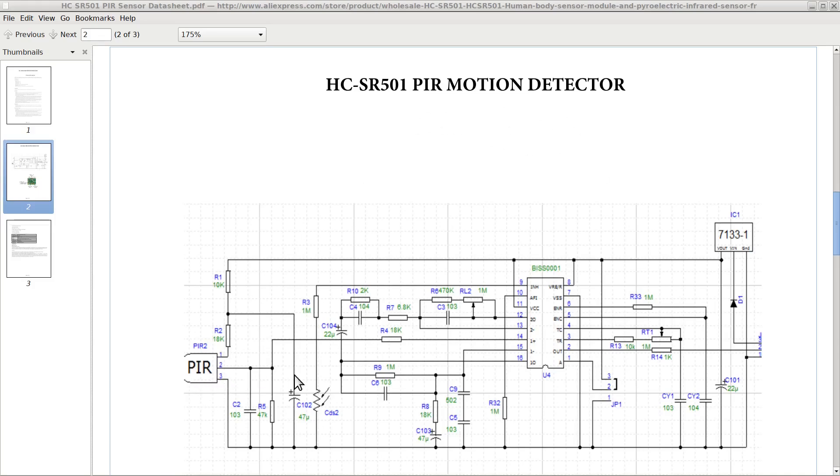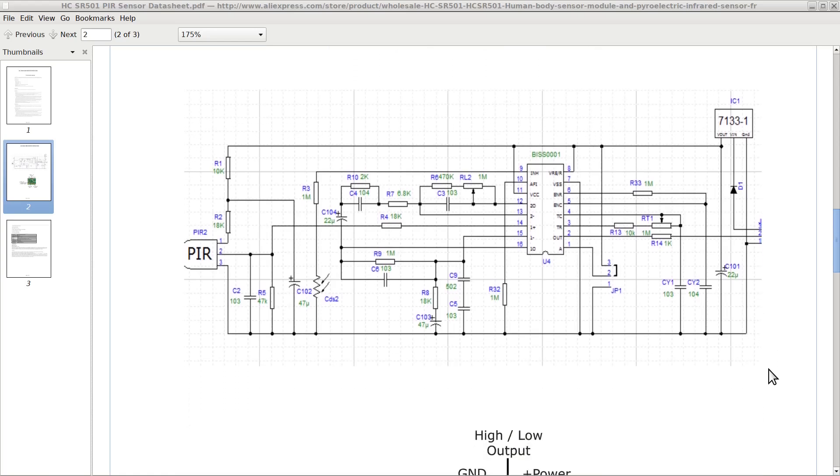It provides a digital output on pin 2 of the header on the right side. Pins 1 and 3 provide the power supply for the whole circuit, internally stabilized to 3.3V by this IC called 7133-1. This arrangement allows us to power the device with any voltage between 5 and 20V DC.